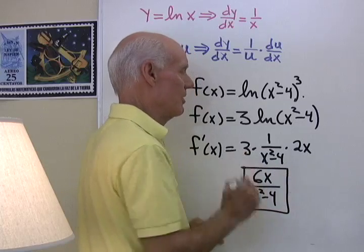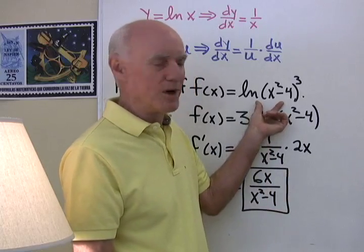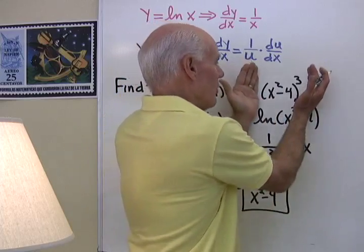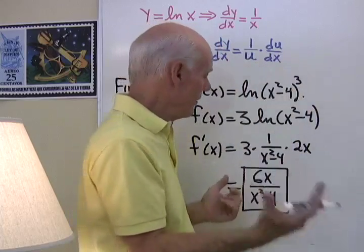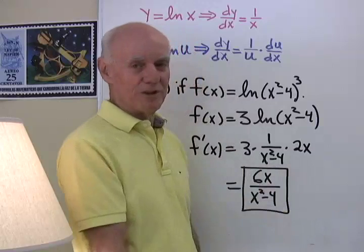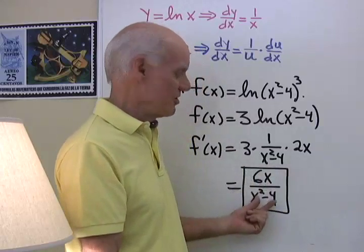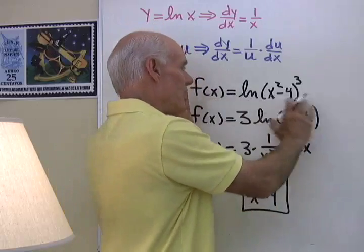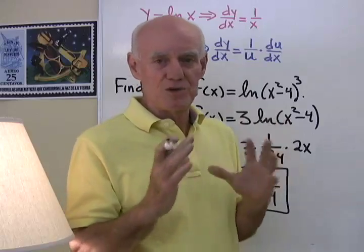So there's that derivative. Now you might try it again the other way, don't simplify it first and just go ahead and find the derivative. It's going to be 1 over this times the derivative of that. Whatever it comes out to be should be equivalent to this right here, 6x over x squared minus 4. So just to point out, before you take your derivatives, you can always do some manipulation.